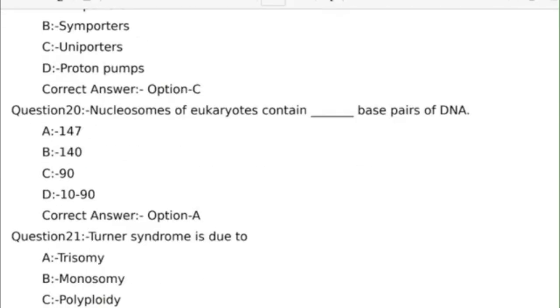Twentieth question: Nucleosomes of eukaryotes contain how many base pairs of DNA? Answer options: Option A, 147; Option B, 140; Option C, 90; Option D, 10-90. Correct answer: Option A, 147.